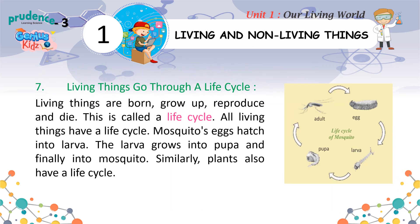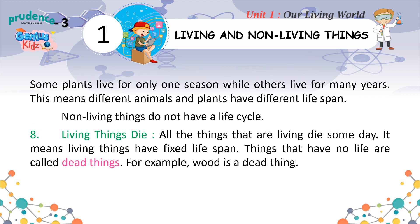Seven: living things go through a life cycle. Living things are born, grow up, reproduce and die — this is called a life cycle. All living things have a life cycle. For example, mosquito eggs hatch into larvae, the larva grows into pupa and finally into a mosquito. Similarly, plants also have a life cycle. Some plants live for only one season while others live for many years, meaning different animals and plants have different life spans. Non-living things do not have a life cycle.